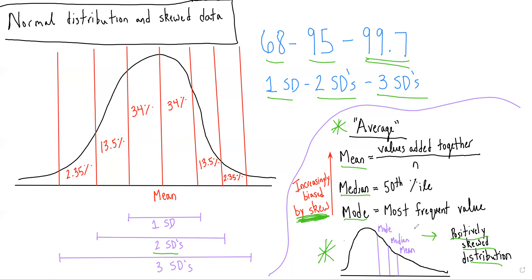So normal distribution and skewed data comes up over and over again on the test. These are really the two most common ways that it'll actually be tested. As always, I recommend that you try the associated practice questions because those will show how you can apply these concepts to real NBME style questions.